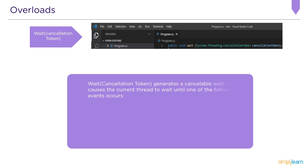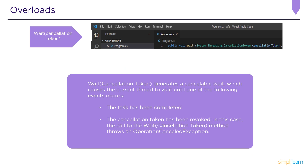Wait(CancellationToken) generates a cancellable wait which causes the current thread to wait until one of the following events occurs: the task has completed, or the cancellation token has been revoked. In the latter case, the call to Wait(CancellationToken) throws an OperationCancelledException.